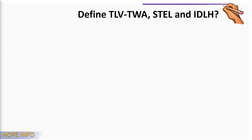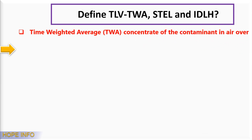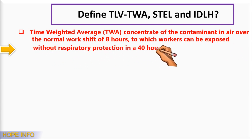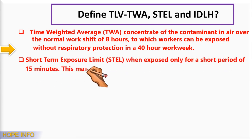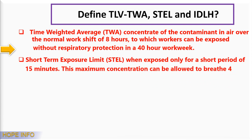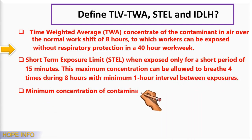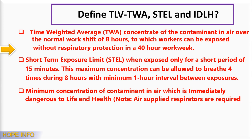Define TLV, TWA, STEL, and IDLH. Time-weighted average (TWA): the concentration of a contaminant in air over a normal 8-hour work shift, to which a worker can be exposed without respiratory protection in a 40-hour workweek. Short-term exposure limit (STEL): when exposed for only a short period of 15 minutes, this maximum concentration can be allowed to breathe 4 times during 8 hours, with a minimum 1-hour interval between exposures. IDLH: the minimum concentration of a contaminant in air which is immediately dangerous to life and health. Note: air-supplied respirators are required in an IDLH atmosphere.